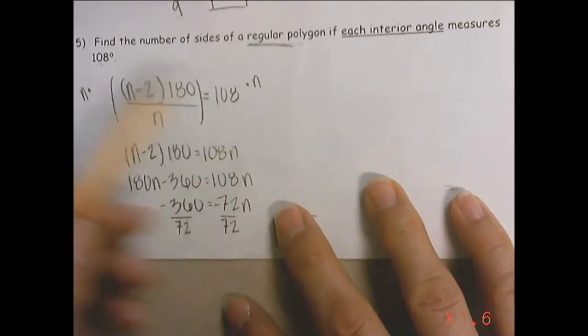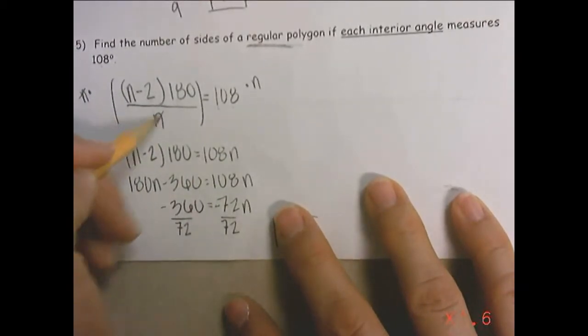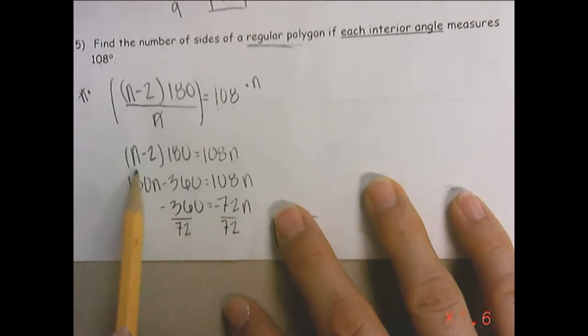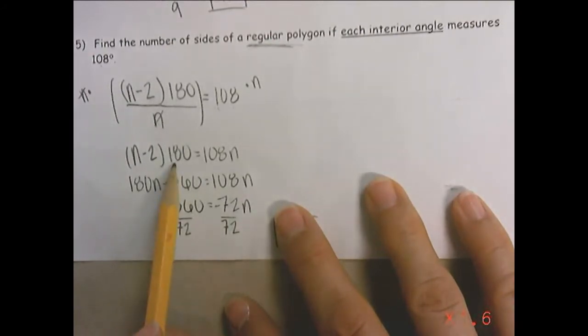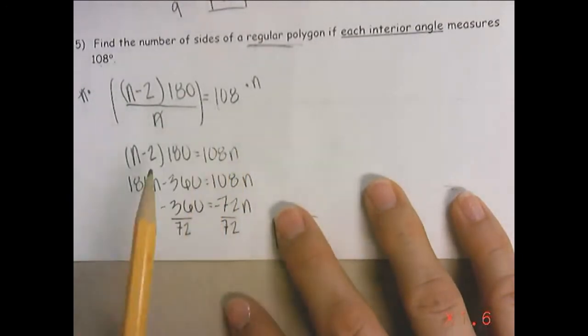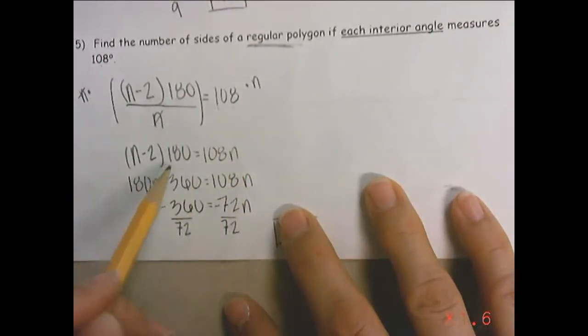So I'm going to start solving by multiplying both sides by n. And these will cancel out. And then I'm left with n minus two times 180 equals 108n. And multiply these two together. So I'm going to distribute that 180 and end up with 180n minus 360 equals 108n.